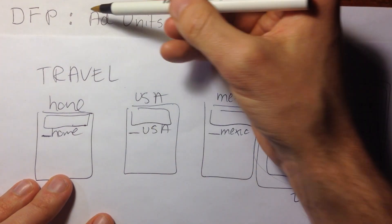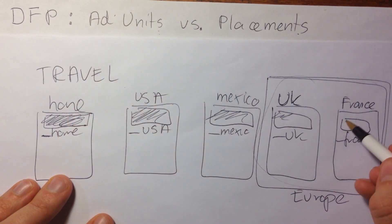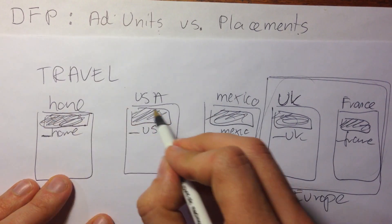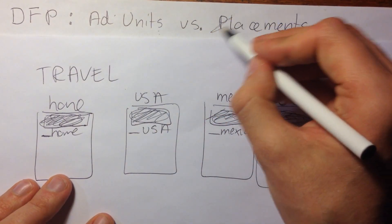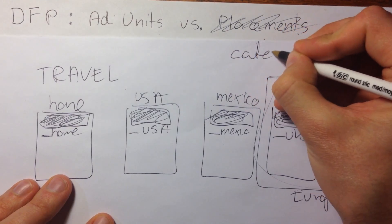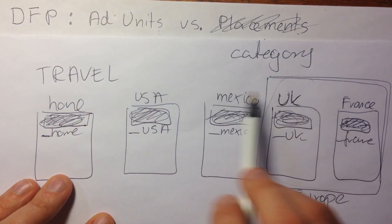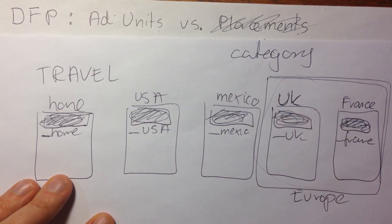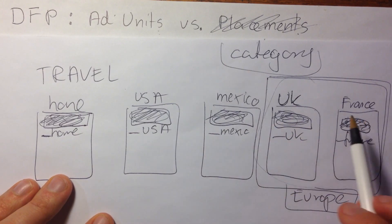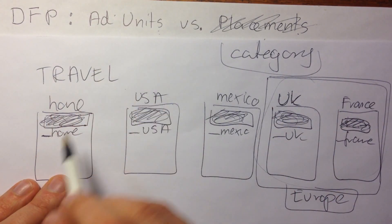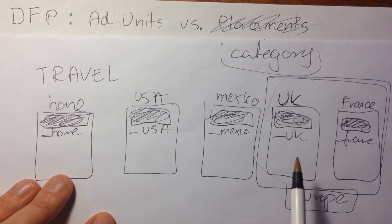The most important concept is that ad units are actual places on the website. Ad units exist on your website — those are placeholders where ads are displayed. Placements, on the other hand, you should forget about the word placements and replace it with the word category. Placements do not exist on the website at all. This is just a tool for grouping your ad units. The categories, meaning the placements, exist only in DFP and are used to categorize and group your ad units. So, ad units are actual places on the website; placements are just categories which group your ad units.